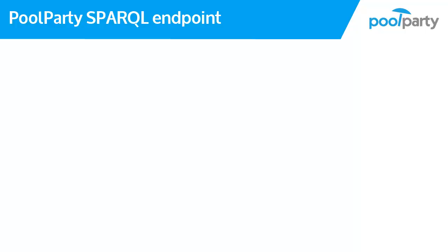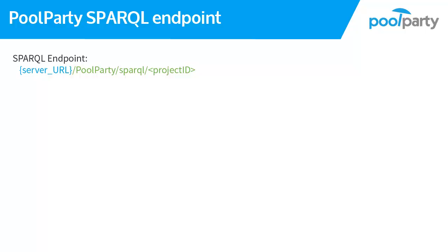Each project you create in PoolParty automatically has a SPARQL endpoint. You can reach it from PoolParty when you open a project, but also by typing your server name slash PoolParty slash SPARQL slash project ID. This endpoint is read-only, so you can query your data from different graphs but not change anything. It does not matter if the project is public or not — this endpoint is always read-only.